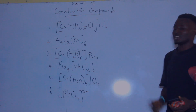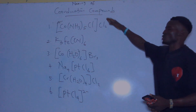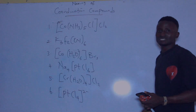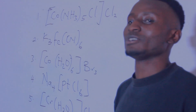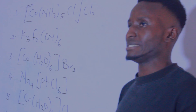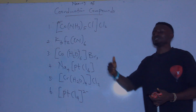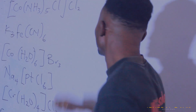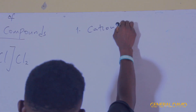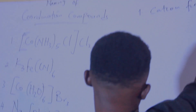There is a set of rules. The first rule says: whenever you want to name a coordination compound, if you have the combination of cations and anions, then the cations should be named before the anions. So the cation comes first before the anion.